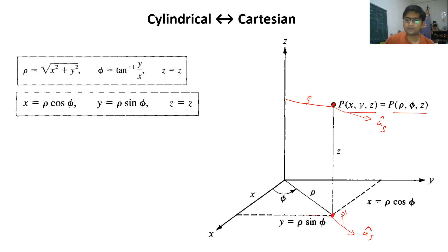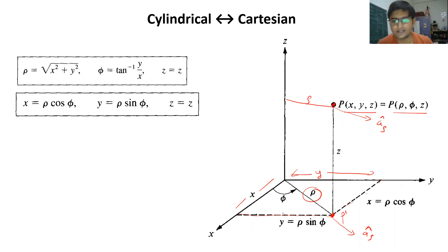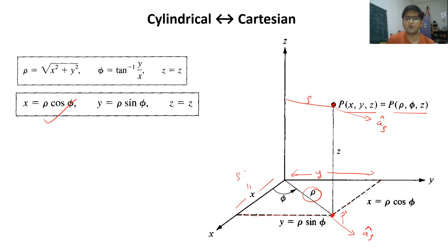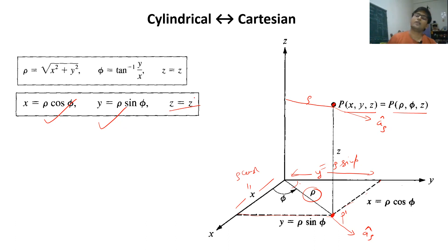From trigonometry, the projection of rho onto the x-axis gives x = rho·cos(phi), and the projection onto the y-axis gives y = rho·sin(phi), because the complementary angle is (90° − phi). Since z is the same in both coordinate systems, z remains unchanged. These are the formulas to convert from cylindrical to Cartesian coordinates.